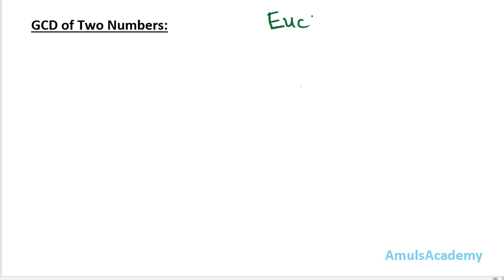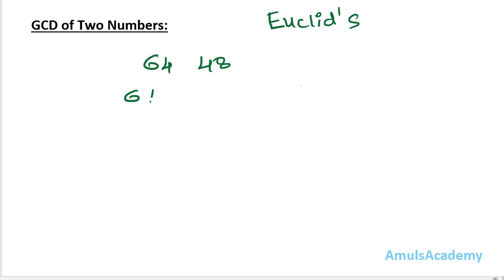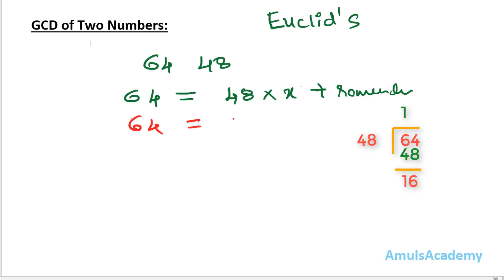The algorithm is called Euclid's algorithm, or the Euclidean algorithm. Taking two numbers — 64 and 48 — the first step is to take the bigger value. Since 64 is greater than 48, we write: 64 = 48 × x + remainder. Here 48 goes into 64 once, so the remainder is 16.